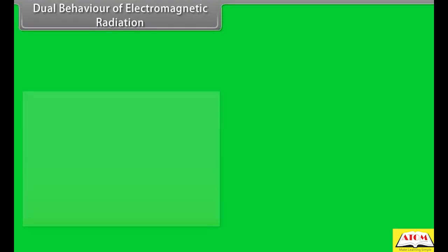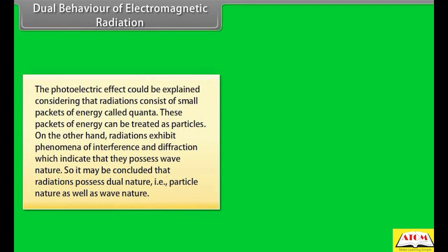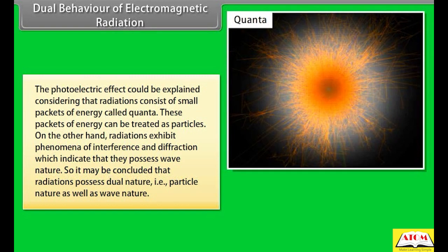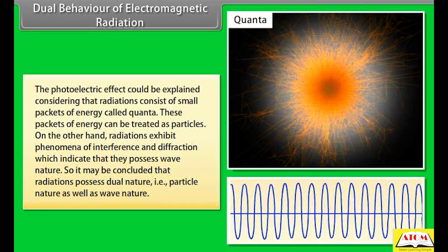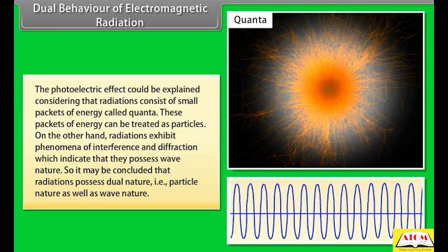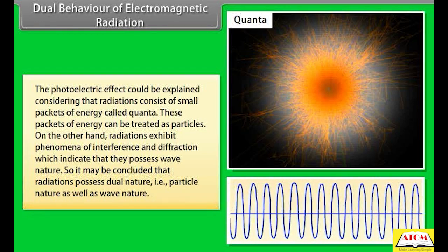Dual behavior of electromagnetic radiation: The photoelectric effect can be explained by considering that radiations consist of small packets of energy called quanta, which can be treated as particles. On the other hand, radiations exhibit interference and diffraction, indicating they possess wave nature. So it may be concluded that radiations possess dual nature — particle nature as well as wave nature.